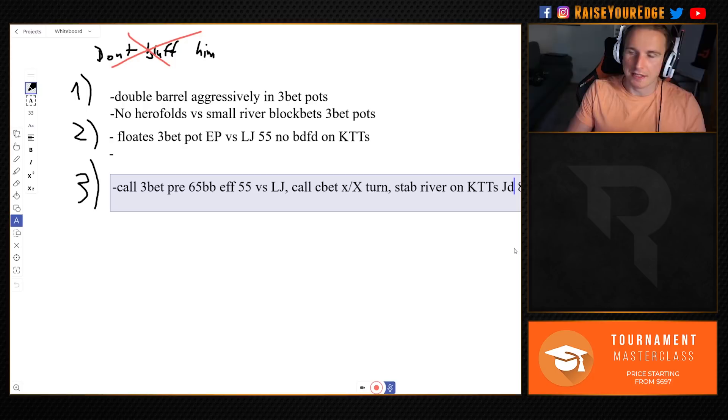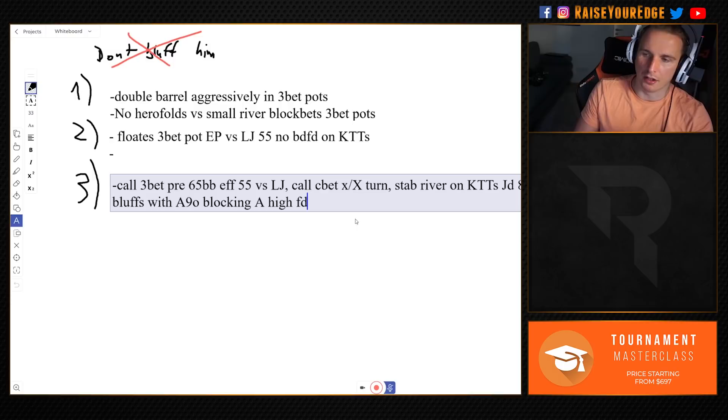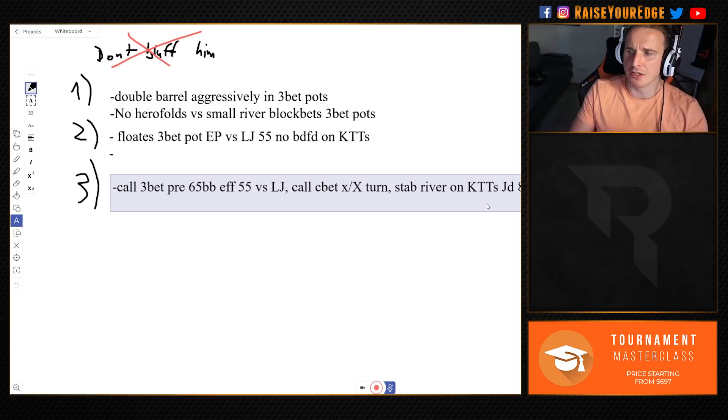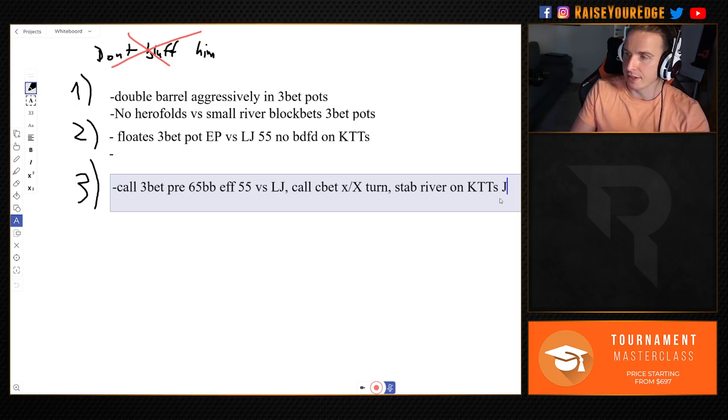You always want to seize the opportunity to get a quick picture on how someone is playing. But if you have too many notes, then you want to cut out the unnecessary stuff. And the third, there you can write down the entire hand history in case you have the time. Not the entire, you still want to keep it short and precise. So here we also use the stack sizes. Call 3-bet, around 65 big blinds effectively, 5-5 versus low jack, call c-bet, check check turn, and then bet river on king 10-10.